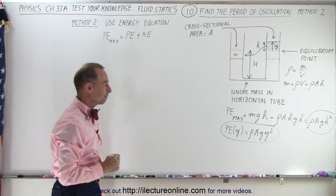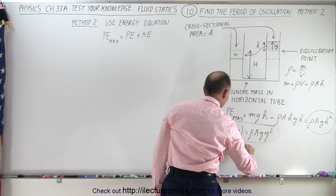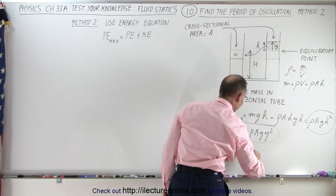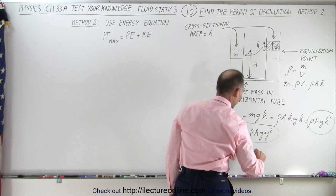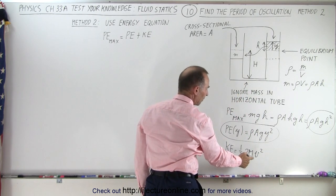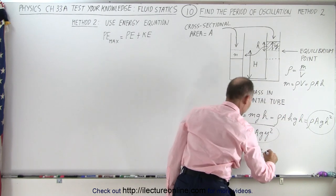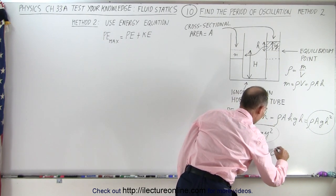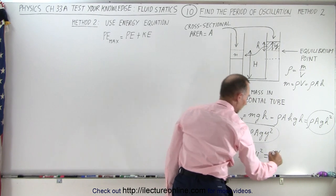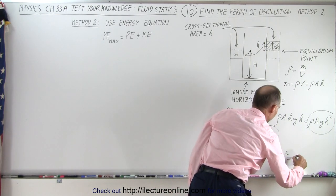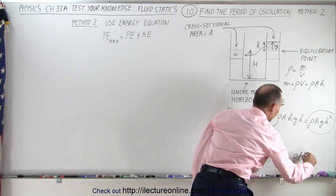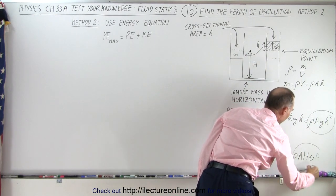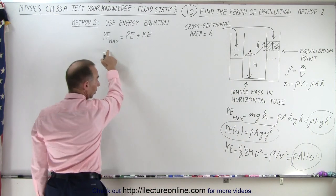Now we still need to get the kinetic energy. The kinetic energy is going to be one-half times the mass in both tubes — so one-half times two times the mass in each tube times velocity squared. The one-half and two cancel out. Mass is density times volume, so this becomes density times the volume of one tube times V squared. The volume of one tube is density times cross-sectional area times big H — where big H is the distance from the bottom to the equilibrium point — times V squared.